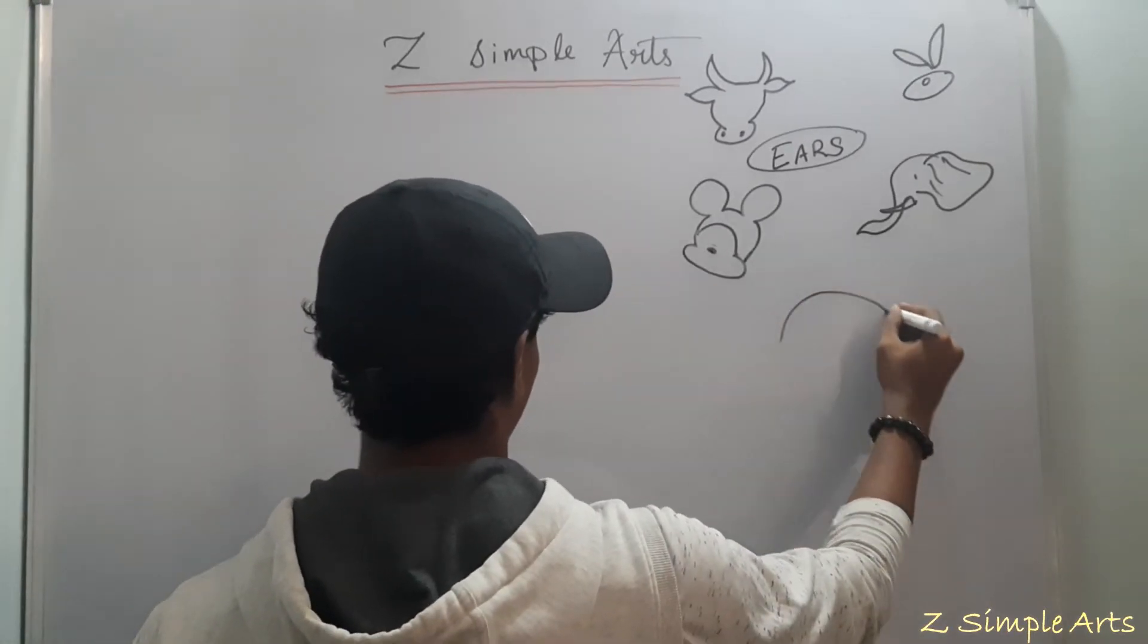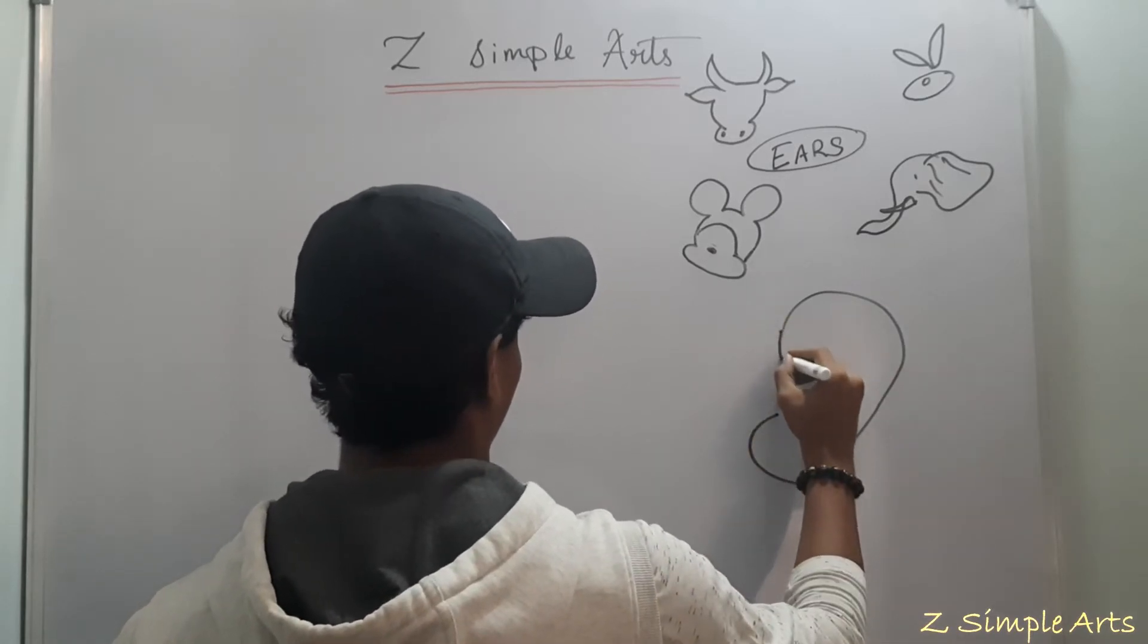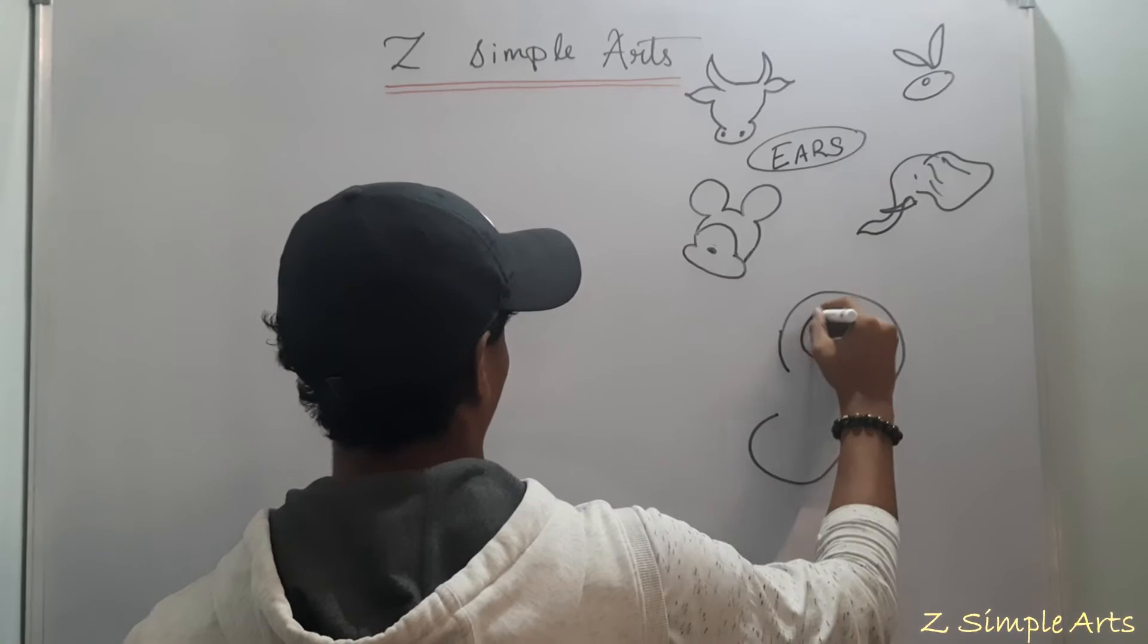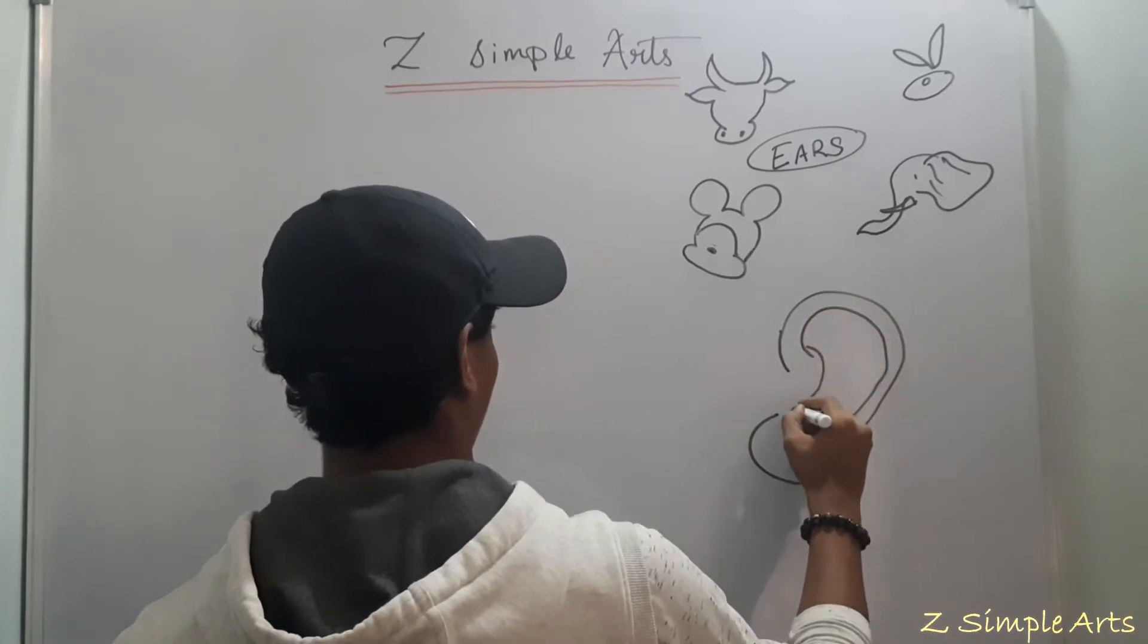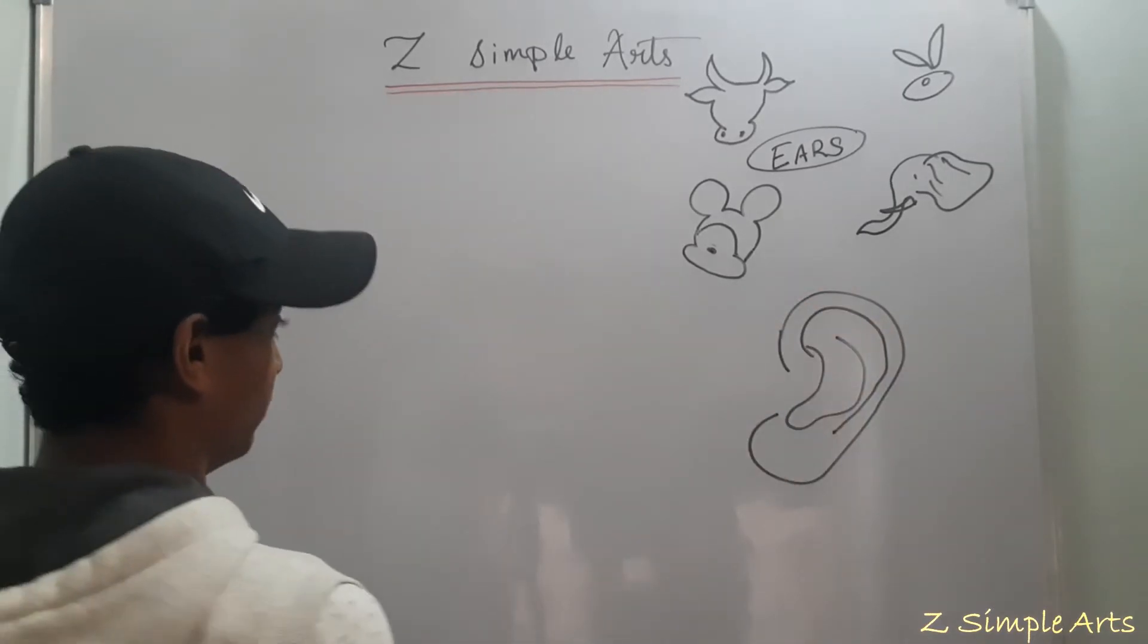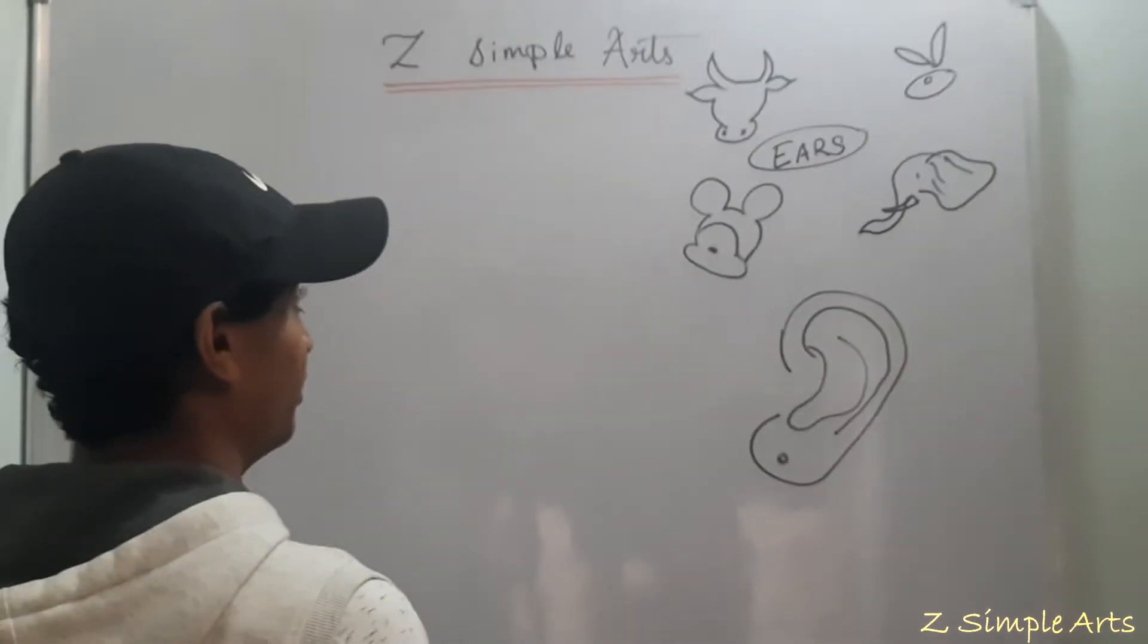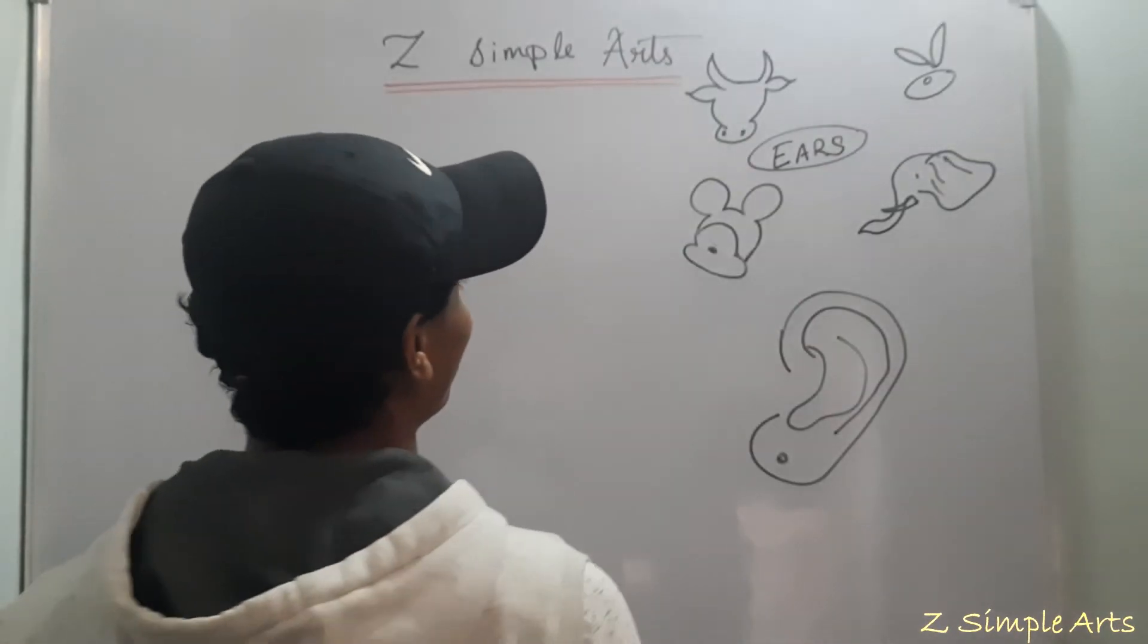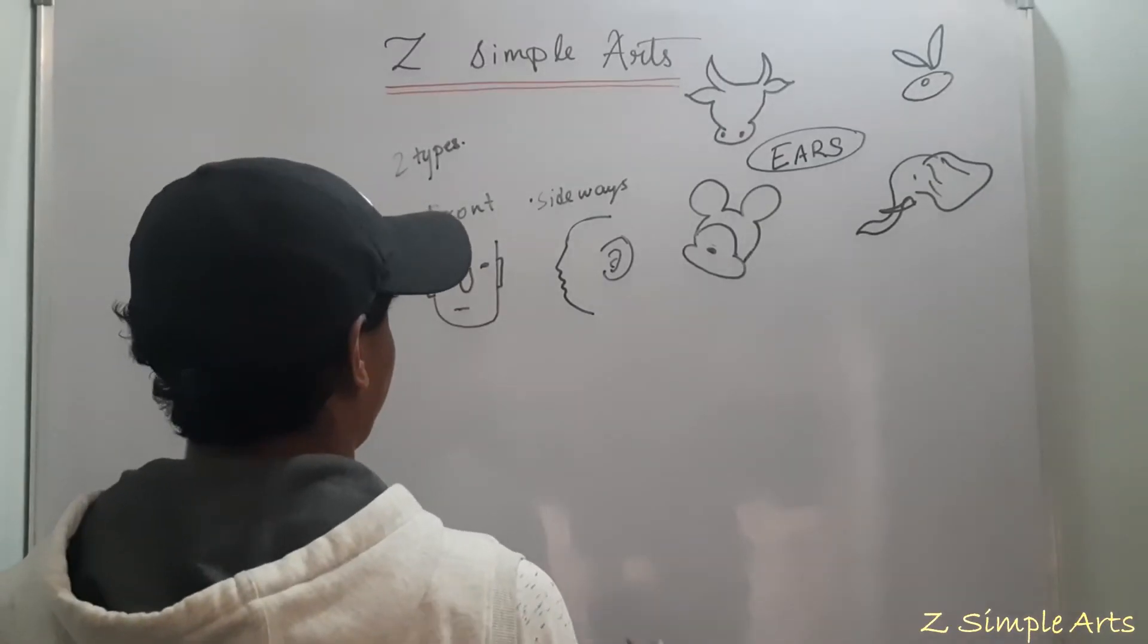So let me put the side look of the ears. This is how the ear looks. And there is ear piercing. Let's not focus on that. How to draw this? Now let's start the basic thing.